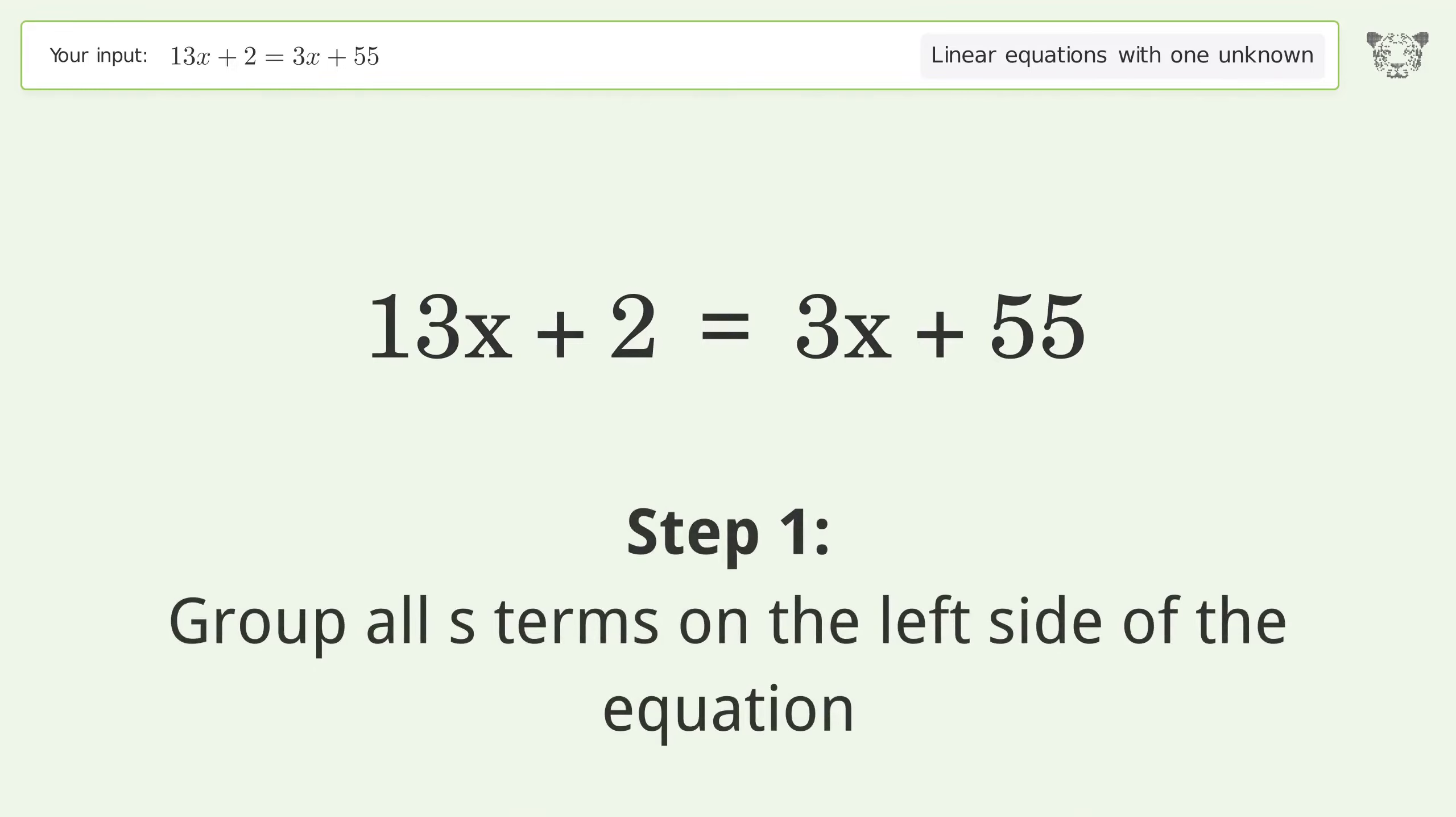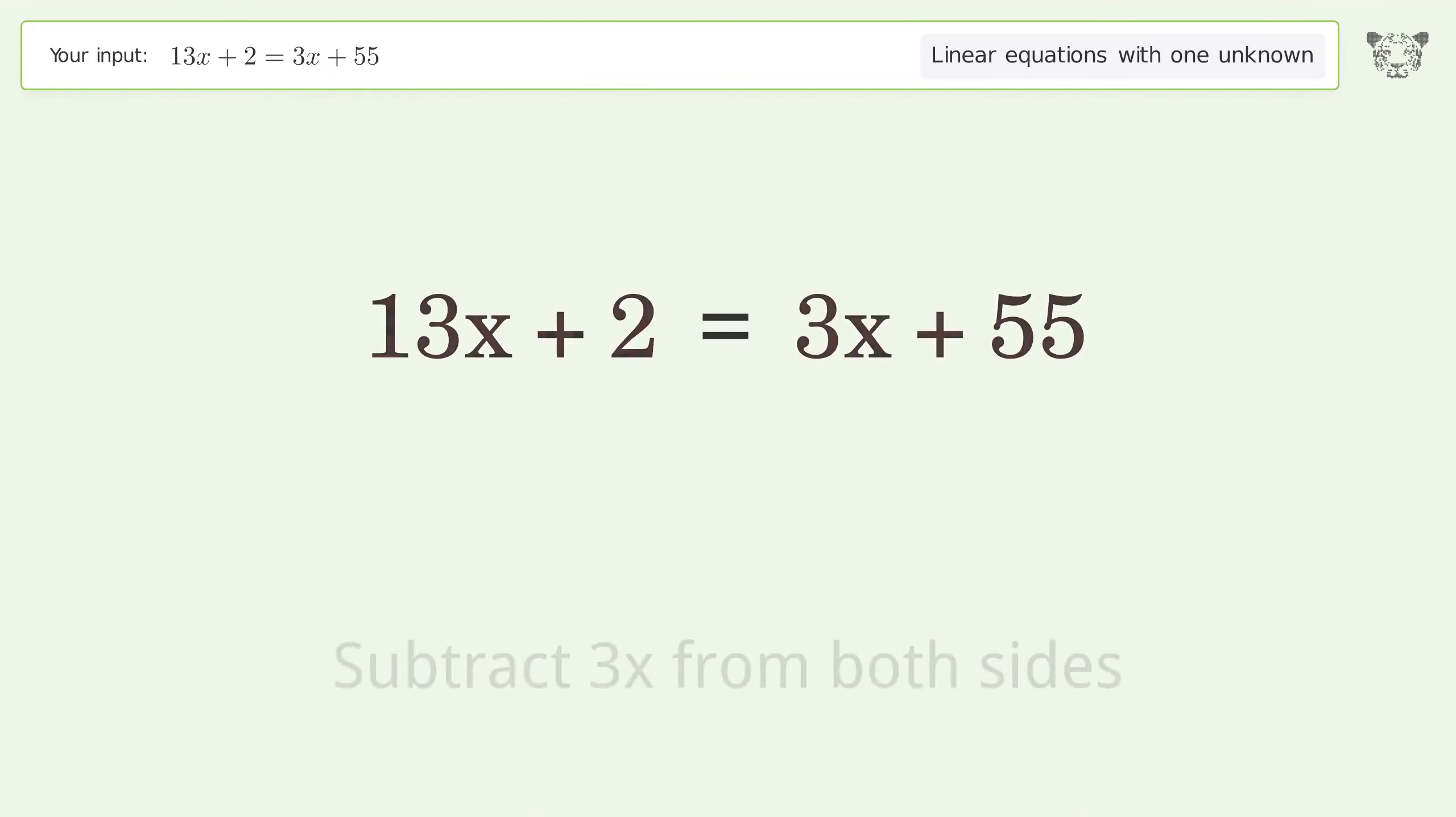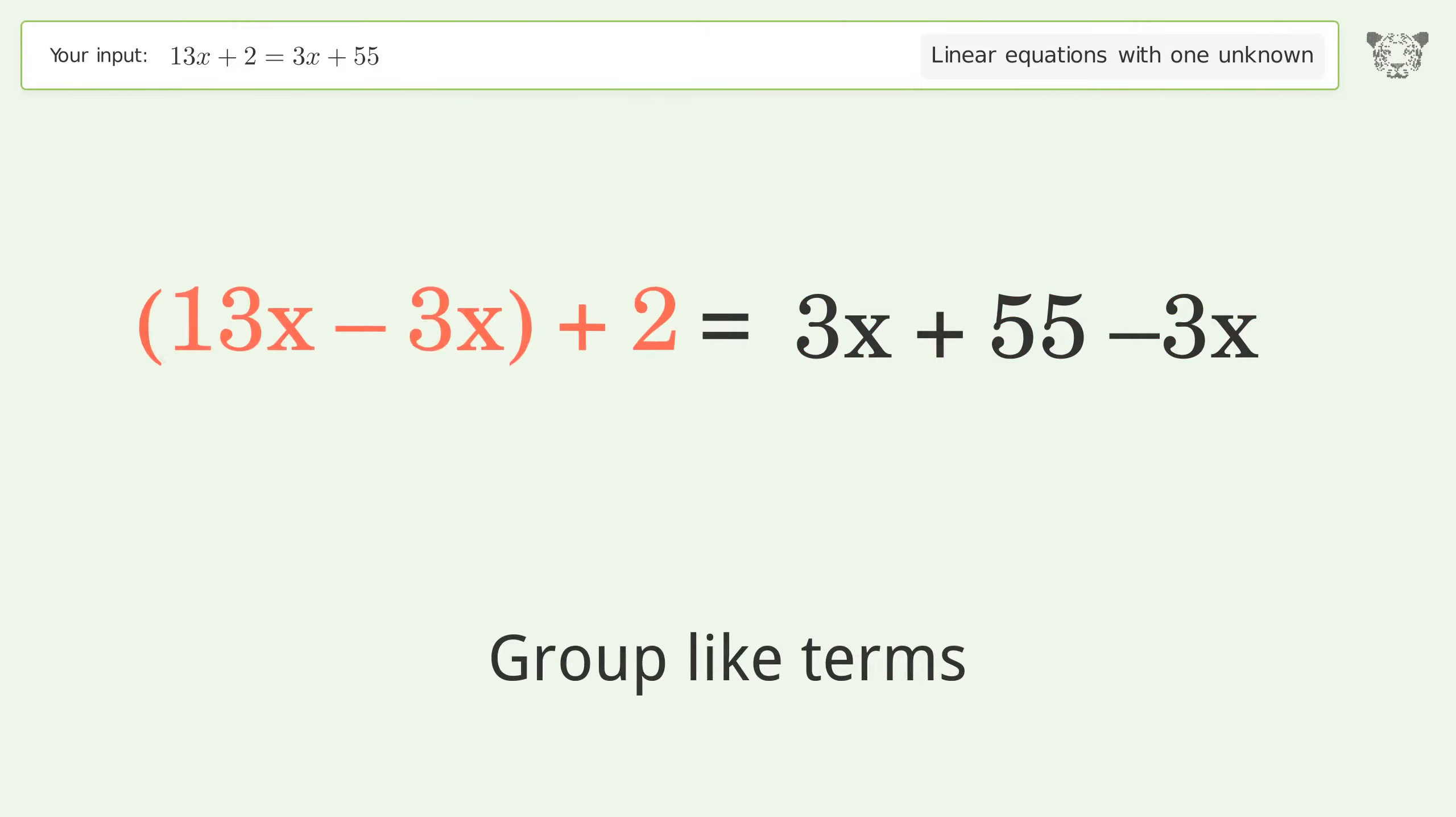Group all x terms on the left side of the equation. Subtract 3x from both sides. Group like terms. Simplify the arithmetic.